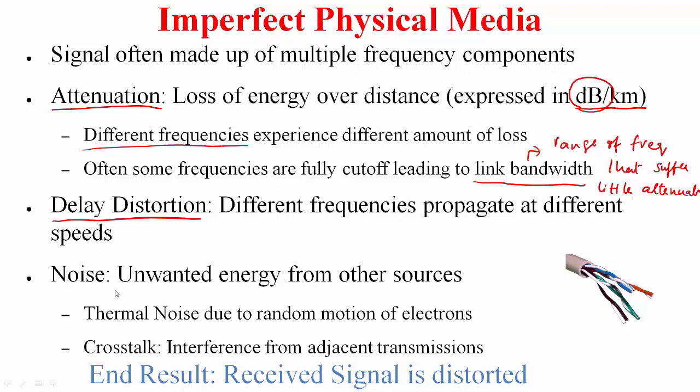These media can also experience noise. For example, thermal noise could be due to random motion of electrons within the media itself, and they can also experience crosstalk because of interference from adjacent transmissions. This figure will show you why crosstalk can happen. As you can see, multiple strands of wires are packed within the same cable, and transmission in this wire could interfere with transmissions in this wire.